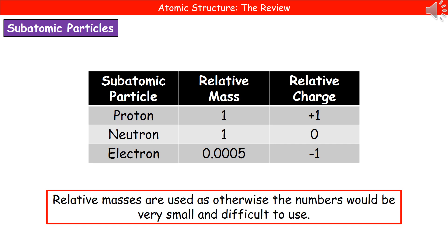So a proton has a relative mass of one and a relative charge of plus one. And the plus is important. Neutrons have a relative mass of one and no relative charge. So it's zero. Electrons have a relative mass of 0.0005 and a relative charge of minus one.